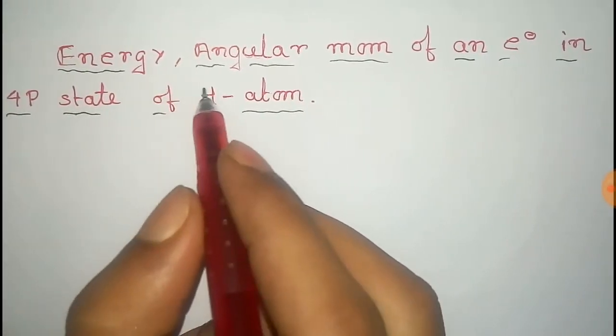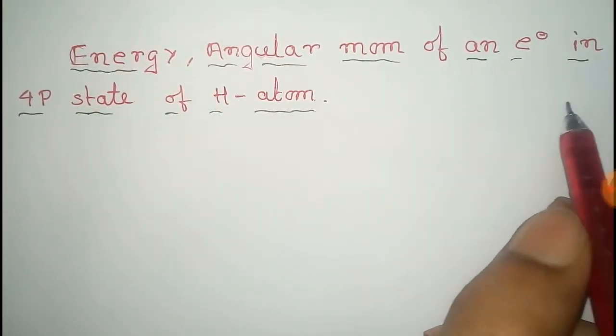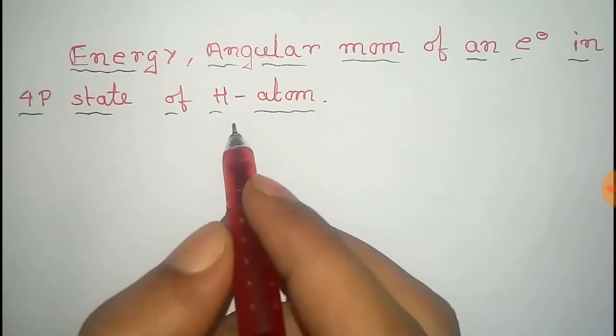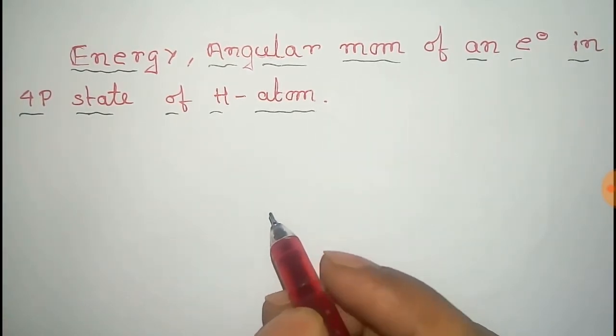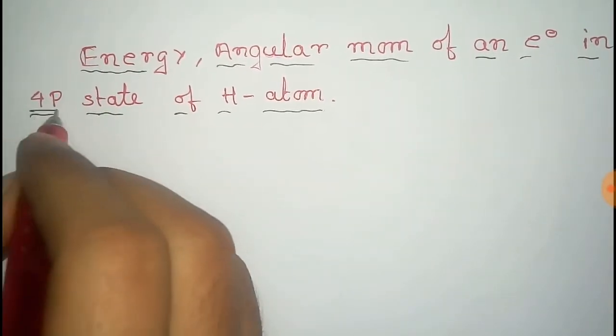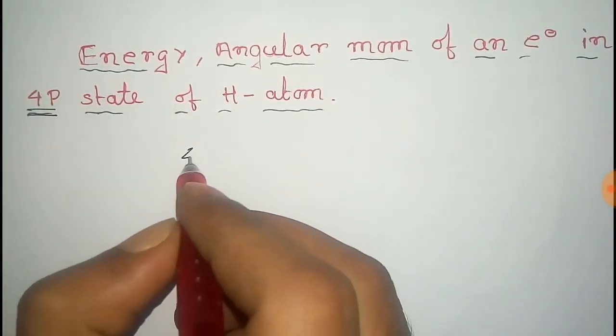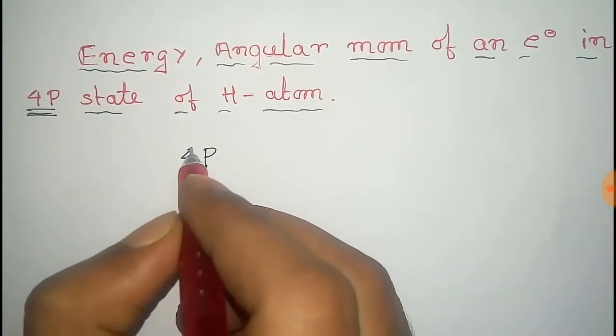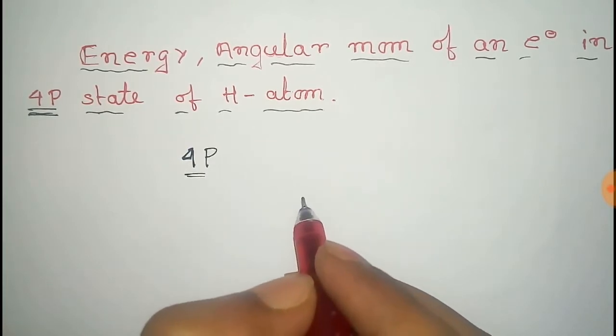In this video we'll find the energy and angular momentum of an electron in the 4p state of a hydrogen atom. The given state is 4p and for this state we have to find the energy and angular momentum.